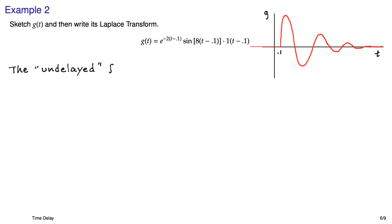So now we have to back out from this the undelayed function. We get this, from which we can go to a Laplace transform table and write out the Laplace transform of f of t, the undelayed function. And then to get the Laplace transform of the delayed function, it's just the same thing, but multiplied by e to the negative 0.1 s. And we can write that like so.